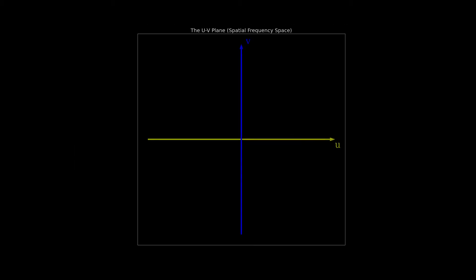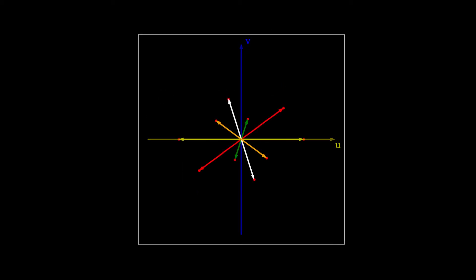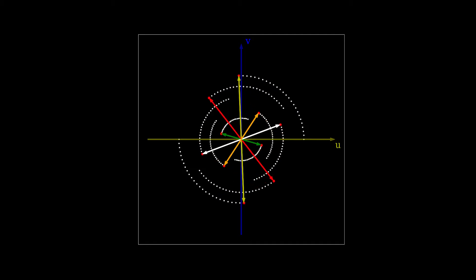In a single integration, typically a few seconds or less, each pair of antennas in an interferometer samples a complex conjugate pair of points in the UV plane. Each pair of points in the UV plane is called a visibility. By combining many pairs of antennas and by letting the sky rotate over the array, a large part of the UV plane is sampled.